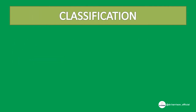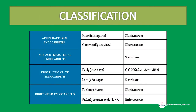Now let's see the classification of infective endocarditis. Acute bacterial endocarditis is of two types: hospital-acquired, caused by Staphylococcus aureus, and community-acquired, caused by Streptococcus. Sub-acute bacterial endocarditis is caused by Streptococcus viridans. Prosthetic valve endocarditis is caused by coagulase-negative Staphylococcus or Streptococcus viridans. Right-sided endocarditis in IV drug abusers is caused by Staphylococcus aureus.